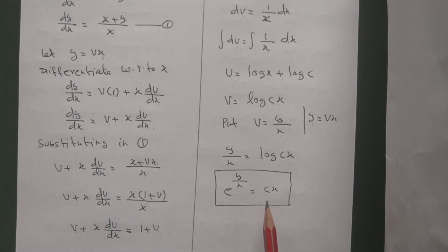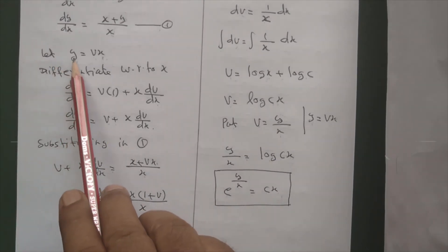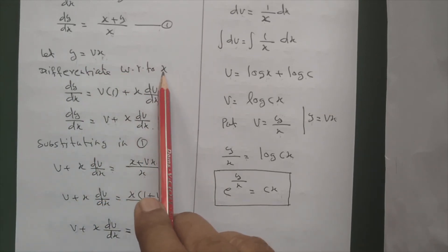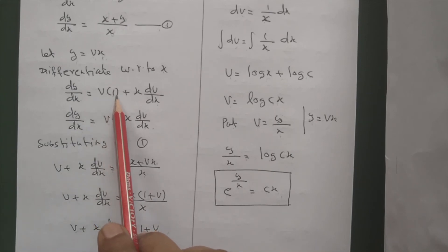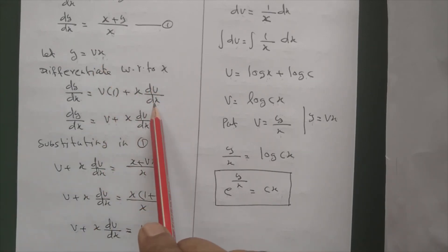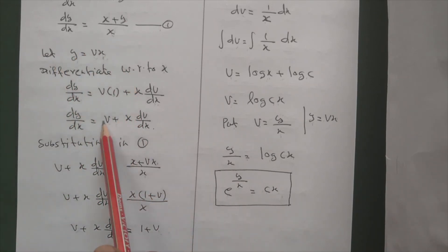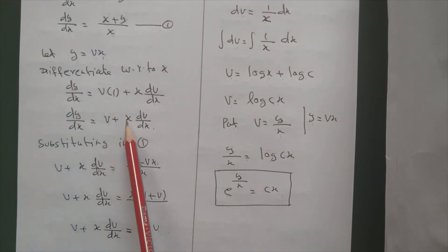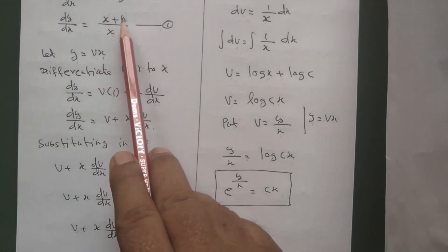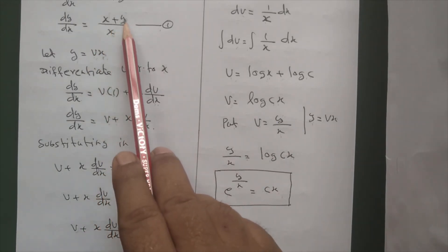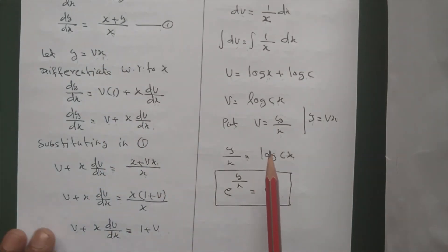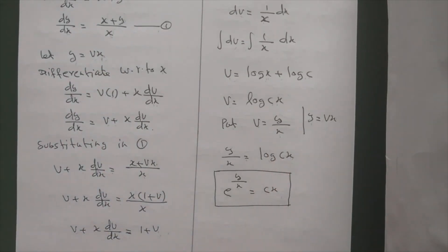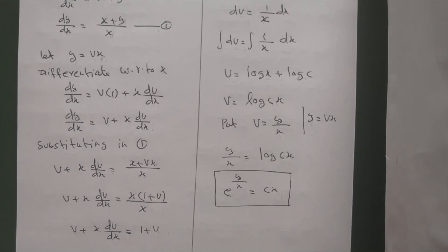To summarize the method for homogeneous equations: first identify it as homogeneous. Then let y equal to vx. Differentiate with respect to x to get dy/dx equal to v plus x dv/dx. On the left side replace dy/dx with v plus x dv/dx, and on the right side replace y with vx. Simplify to reduce the equation to the variable separable method, then separate the variables x and v and integrate.